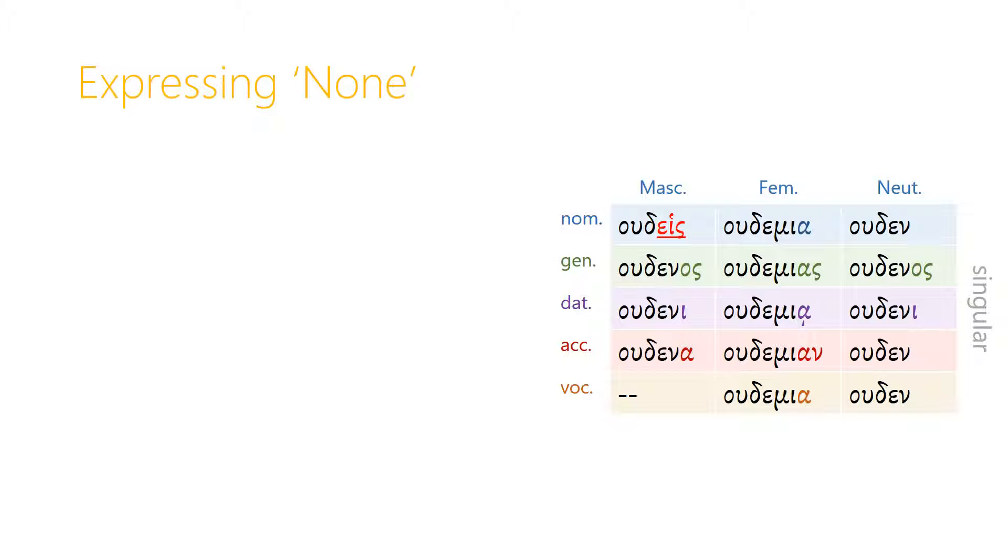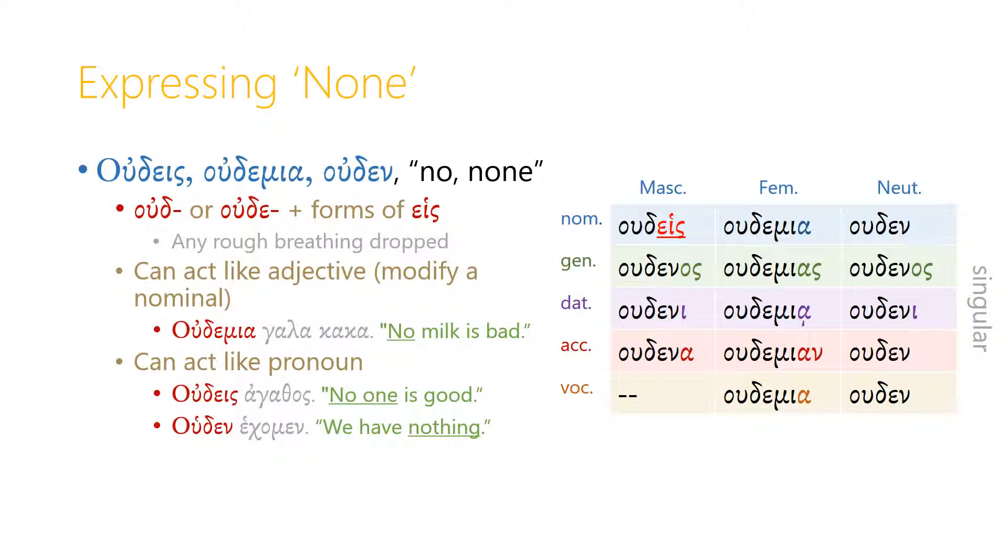How do we express none? Well, we use the number or pronoun oudes, oudemia, uden, which means no or none. The stem oud or ouda gets added onto the forms of heis. So really, oudes, oudemia, uden is completely regular, very easy to figure out if you remember all of your forms of heis, mia, hen. The only thing to remember is that since the number one is being added to the end, we can't have a rough breathing in the middle of a word, so the rough breathing, if it's there, is dropped.